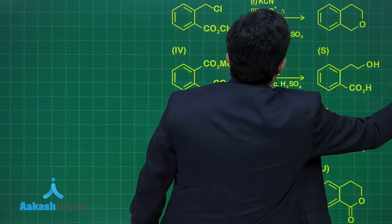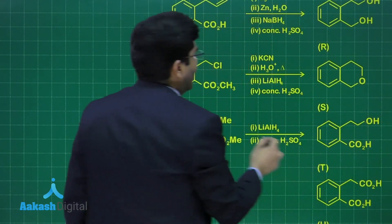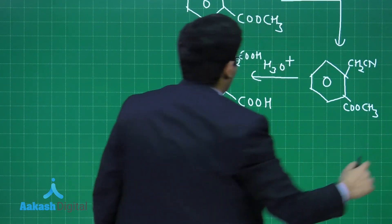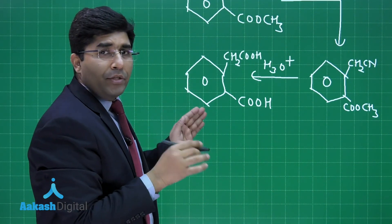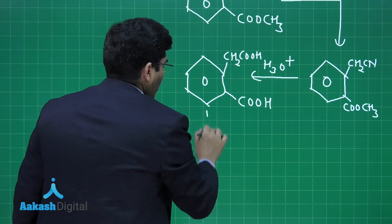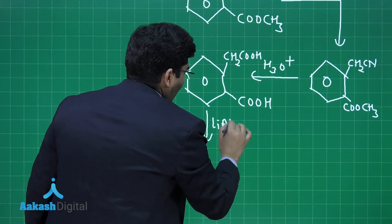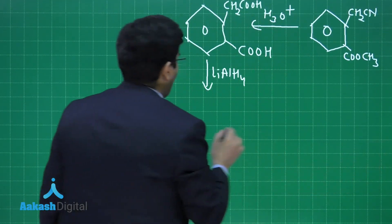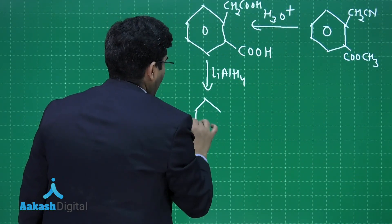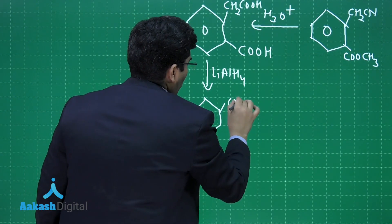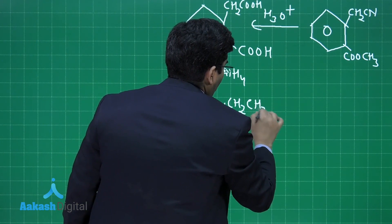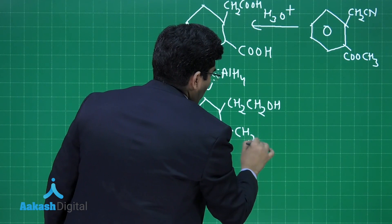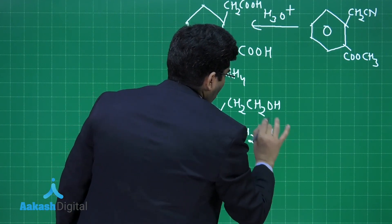After that, he is adding LiAlH4. This LiAlH4 is a very good reducing agent. It will reduce the carboxylic acid to alcohol, and we will get CH2OH and here we will get CH2OH.